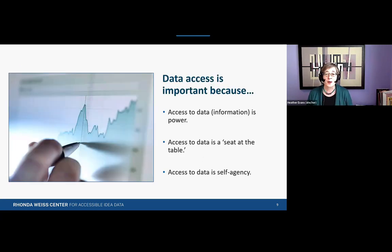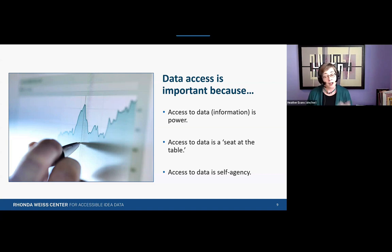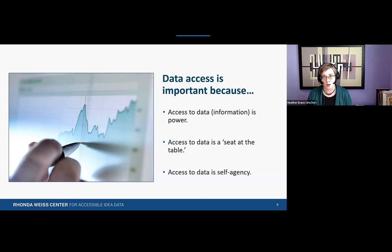To put it more simply, access to information is power. Having power means having a seat at the table — hopefully a height adjustable table. But without information and inclusion, it is far more difficult to exercise agency in an efficient and effective manner.